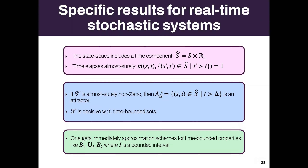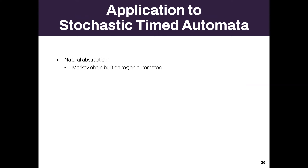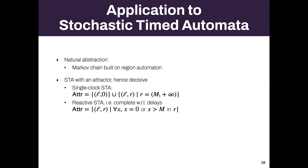This is a theoretical result, but it applies to quite some classes of systems. I showed stochastic timed automata, and we can use abstractions — specifically, the Markov chain built on the region automaton. Under several assumptions — either single-clock automata, or what we call reactive timed automata (timed automata that are complete with respect to delays, meaning you can always wait in any state) — we can find finite attractors in the region automaton.